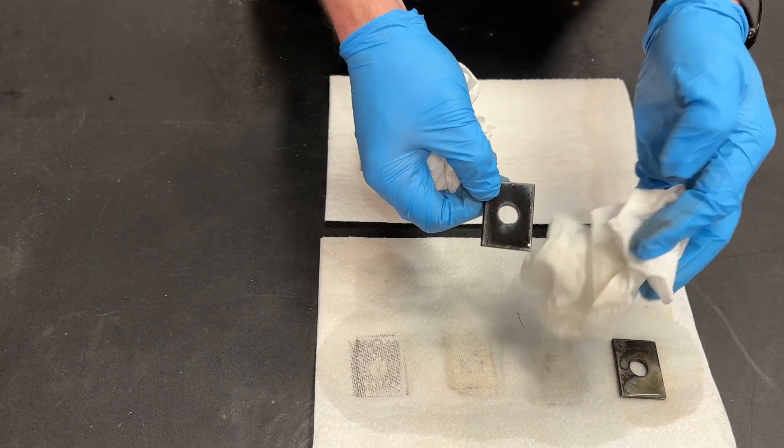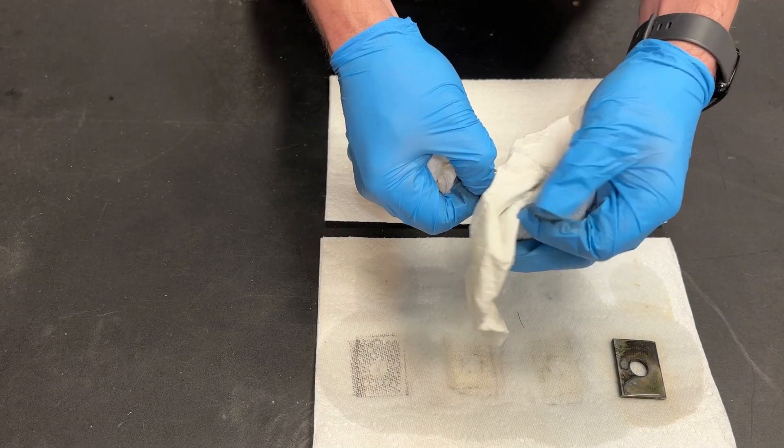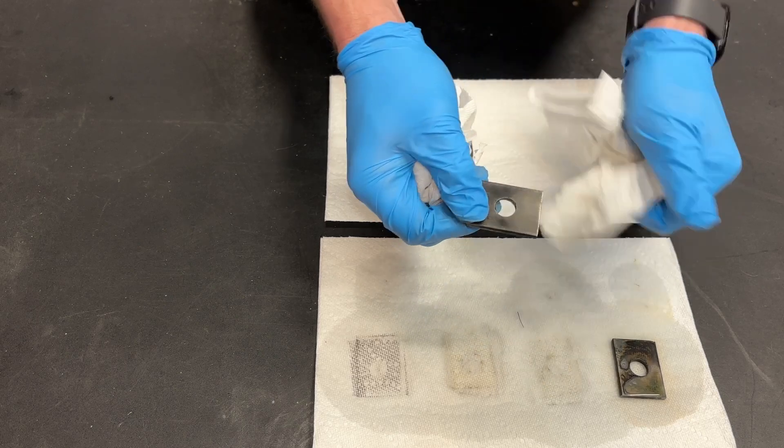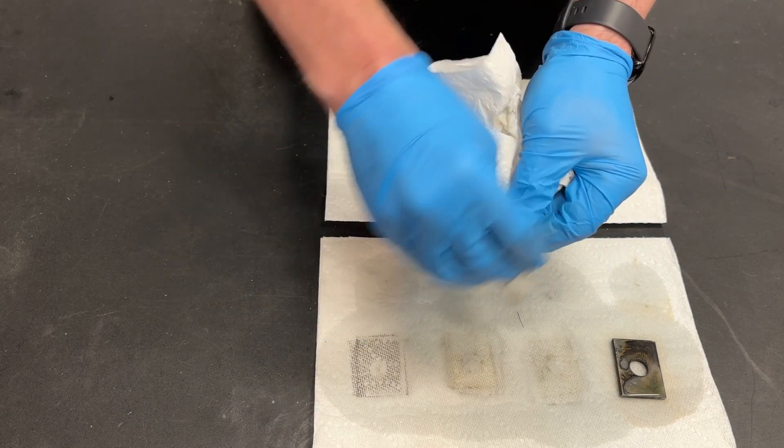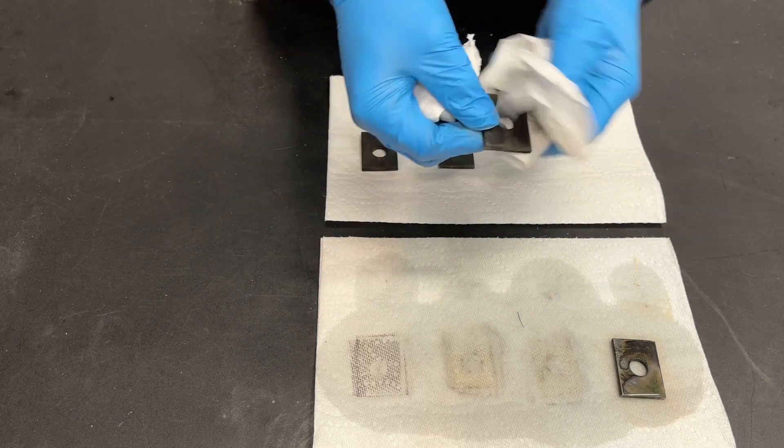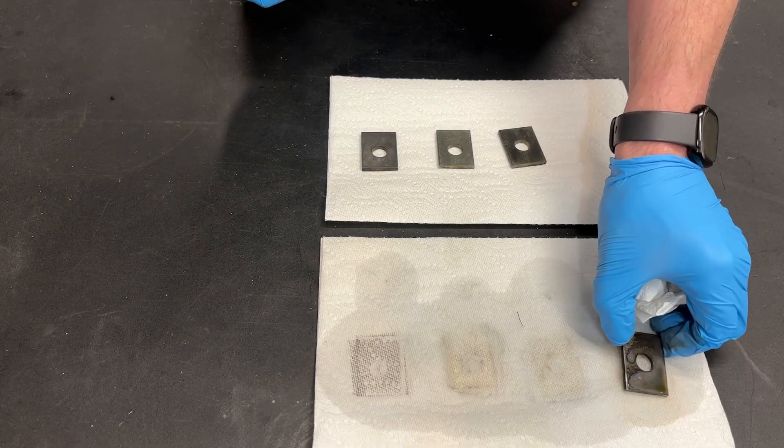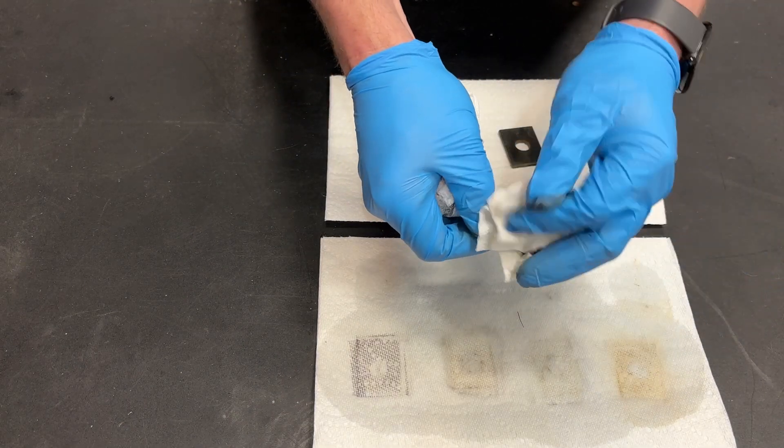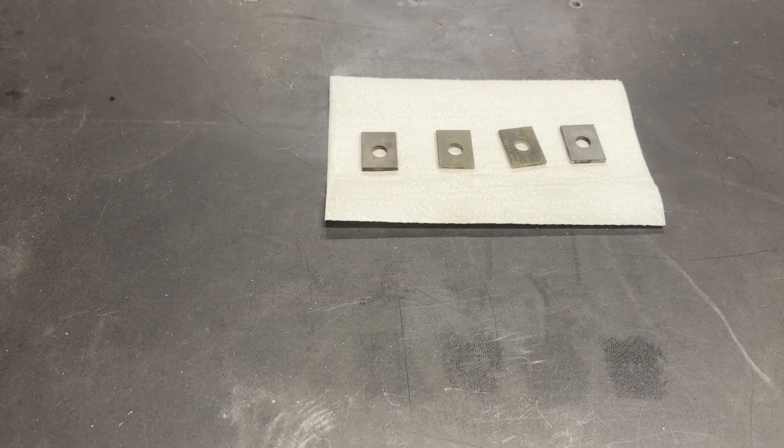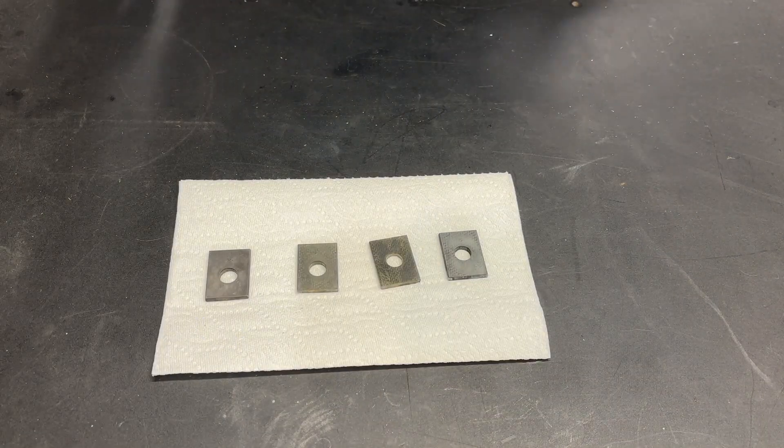The Perma Blue is a nice black finish for the moment. And the Perma Blue is actually holding to the polished finish a little better than the JAX and the Caswell. And finally the Super Blue.